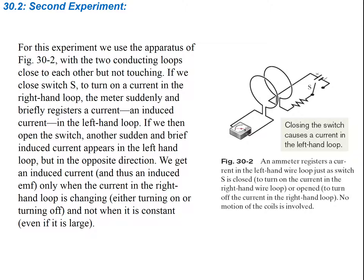If we then open the switch, another sudden and brief induced current appears in the left-hand loop, but in the opposite direction. We get an induced current and thus an induced EMF only when the current in the right-hand loop is changing — either turning on or turning off — and not when it's constant, even if it is large. The magnetic field from the loop connected to the EMF source induces a current in the other circuit only if the current is changing.